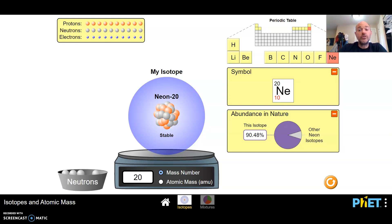Neon 20 is the most common isotope. So 90.48% of the neon atoms are going to be neon 20.